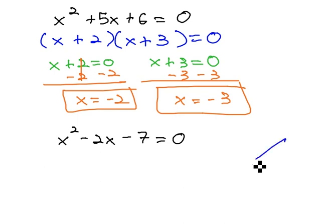If we were to try and factor it, we would want to multiply to negative 7 and add to negative 2, but with a little bit of work, we would find out that is impossible. The only way to multiply to 7 is 7 times 1, and neither of those are going to give us negative 2.